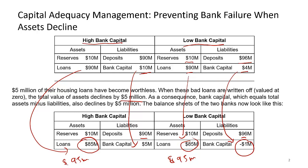Negative $1 million in bank capital means the bank is insolvent — it cannot pay its depositors, and the balance sheet cannot balance because negative equity has no meaning. The high-capital bank weathered the loan defaults by reducing its capital; shareholders took a hit but survived. The low-capital bank, holding only $4 million against a $5 million loss, has failed.